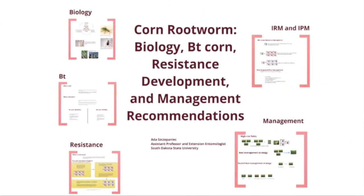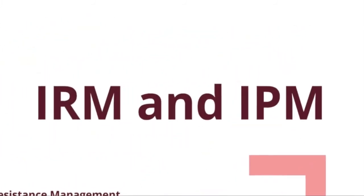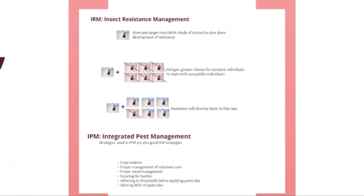So far we've covered the biology of rootworms and talked about how closely their development is tied to corn. We've discussed BT technology and how and why resistance develops. Now we're going to move on to strategies to slow down development of resistance and some specific recommendations for managing these insects. Insect resistance management, IRM, and integrated pest management, IPM, are really all about one thing: slowing down development of insect resistance to chemical control and sustainable, long-term strategies for management of insect pests.